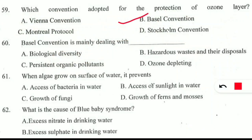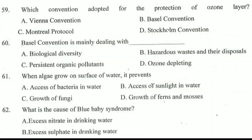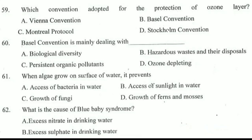You should note down these years. Montreal Protocol came under the Vienna Convention. So first was Vienna Convention signed in 1985, which is why we select it as the correct option. Basel Convention was signed in 1989 — this is called connected revision, because from one question you connect with previous knowledge. Stockholm Convention was signed in 2001 and is related to persistent organic pollutants. So from one single question you came to know four years and which is the correct option.